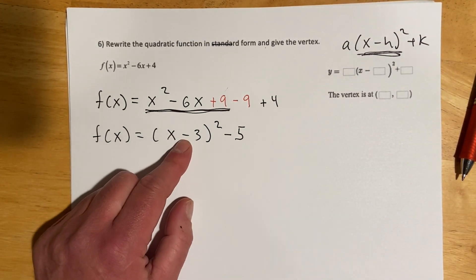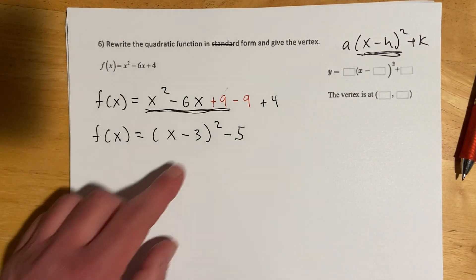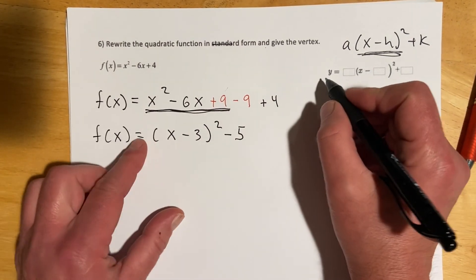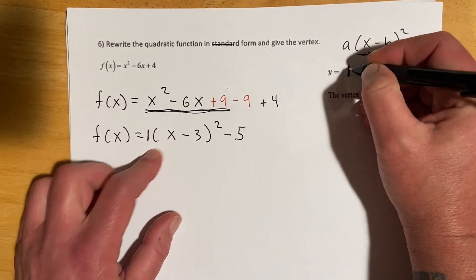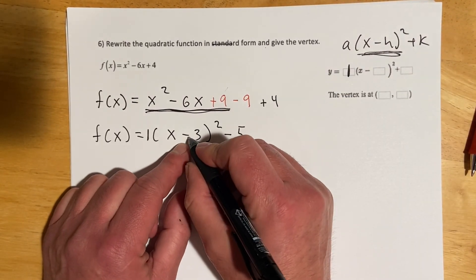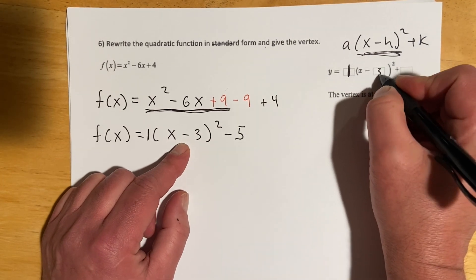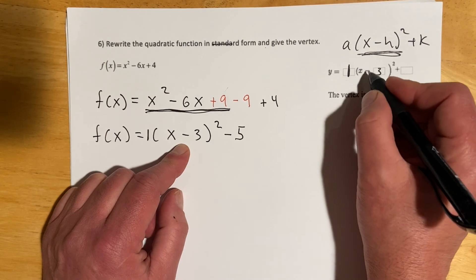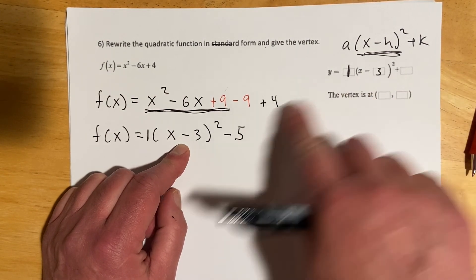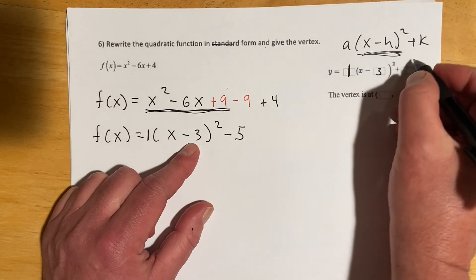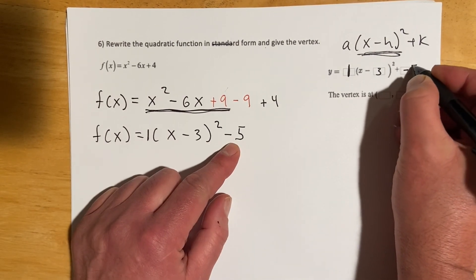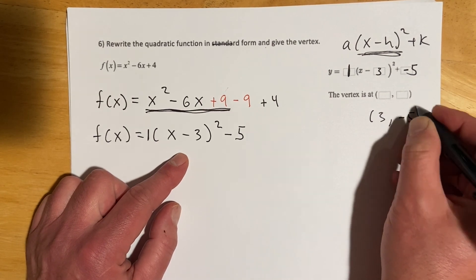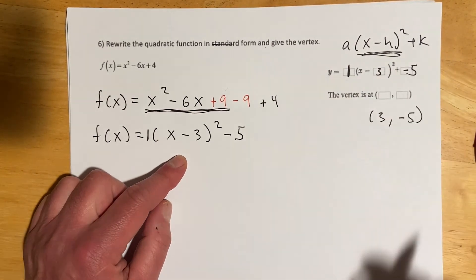Now we have what I call vertex form — the problem calls it standard form. The a value here is the invisible 1. The h value is 3: if the formula showed plus 3 you'd write negative 3, but since the minus is already in the formula you put the sign of the actual vertex coordinate. Then k is negative 5. So vertex is at (3, −5).